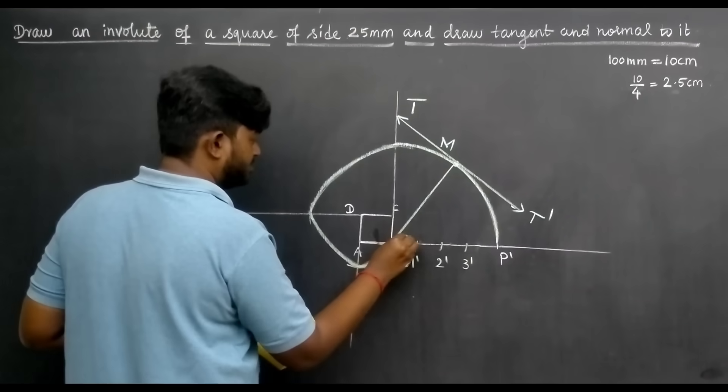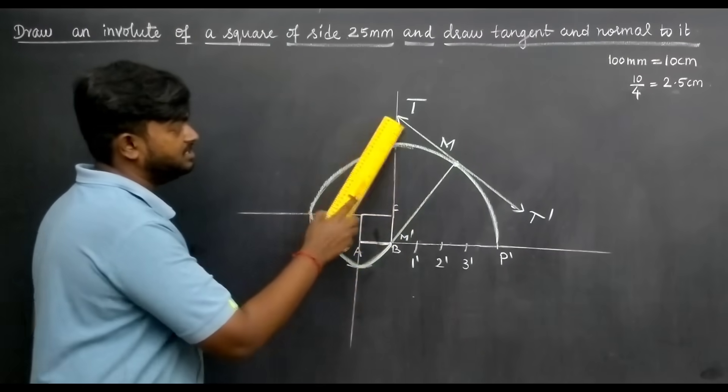Mark M-dash. So M-dash is normal and this is the tangent. Next, we have measurements here.